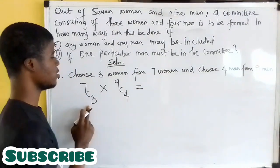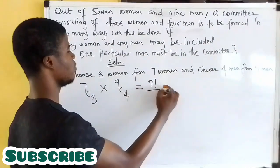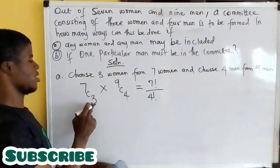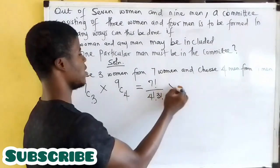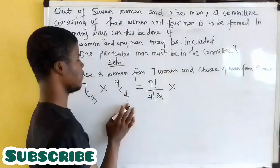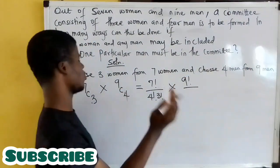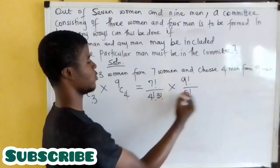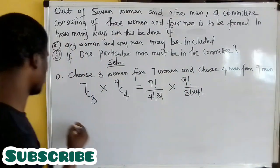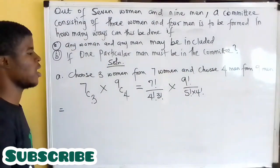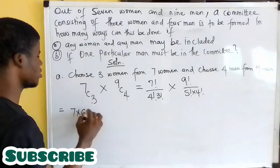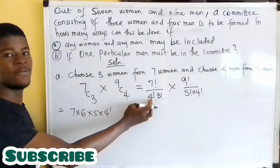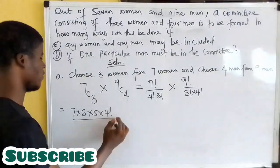Seven combination three is seven factorial over seven minus three factorial — that's four factorial times three factorial. Times nine combination four, which is nine factorial over the factorial of nine minus four, that is five factorial times four factorial.